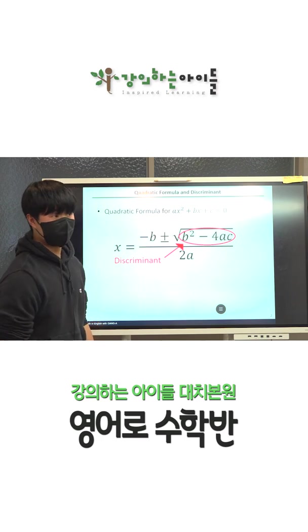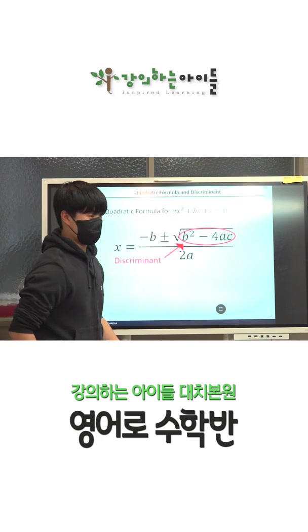For a discriminant of zero, we would have a multiple root. Okay, perfect.